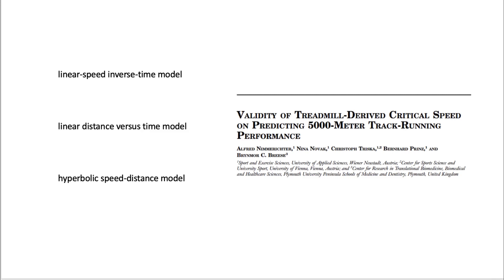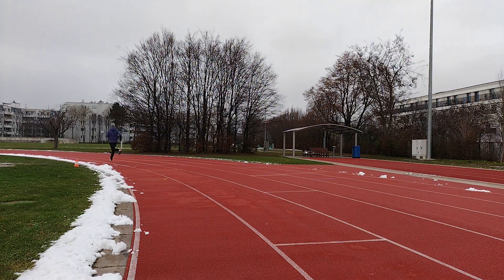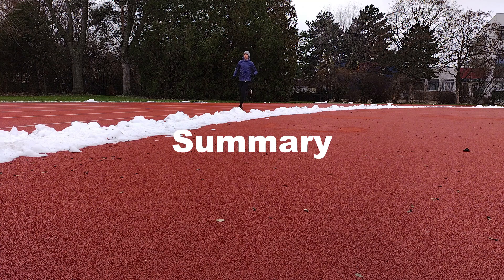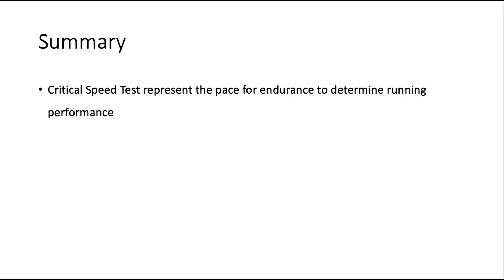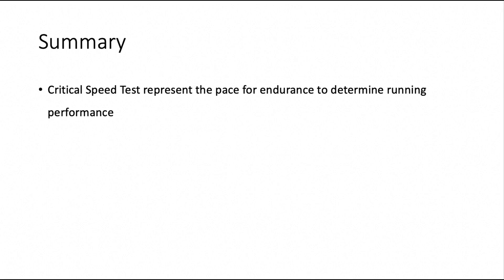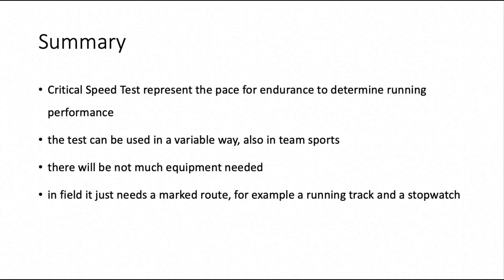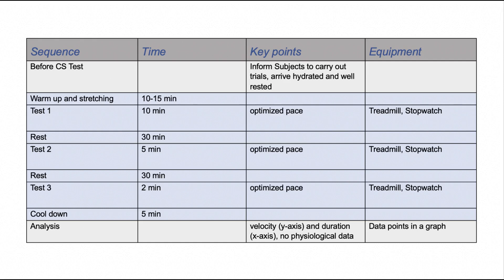In conclusion, the critical speed test serves as a valid and simple alternative to spiroergometric and blood lactate tests, and can be used as a useful orientation for expected finishing times in running competitions. The critical speed test represents the pace for endurance to determine running performance. The test can be used in a variable way, also in team sports, and there will not be much equipment needed. In the field it just needs a marked route — for example a running track — and a stopwatch. In the laboratory, a treadmill is needed.